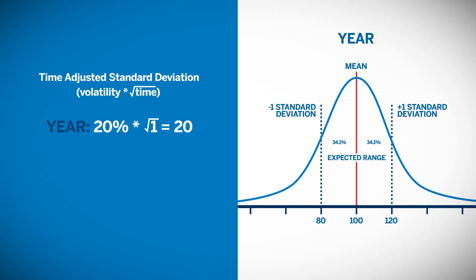If you have a different time horizon, we can calculate that as well by adjusting the volatility using the square root of time. For a one-month period, the standard deviation would be 20% times the square root of 1/12th.